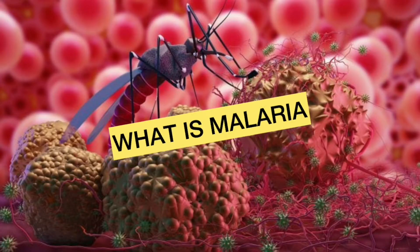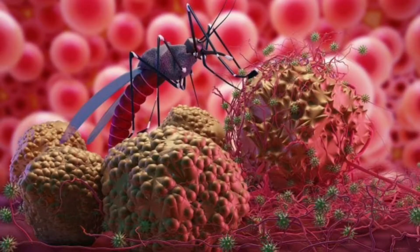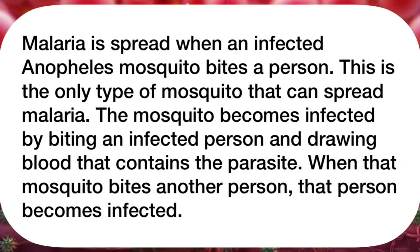What is malaria? Malaria is a life-threatening disease caused by the plasmodium parasite and is transmitted to people through the bites of an infected female anopheles mosquito. Malaria is spread when an infected anopheles mosquito bites a person. This is the only type of mosquito that can spread malaria. The mosquito becomes infected by biting an infected person and drawing blood that contains the parasite. When that mosquito bites another person, that person becomes infected.